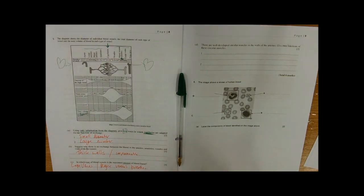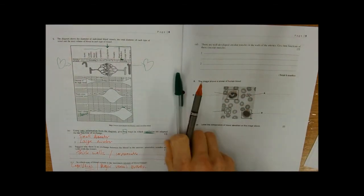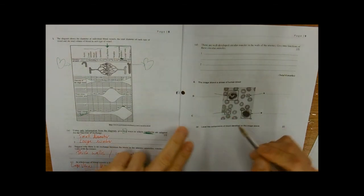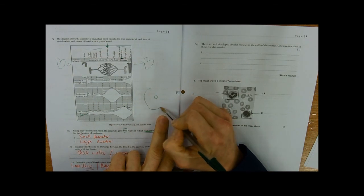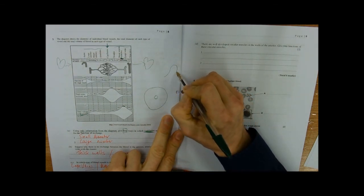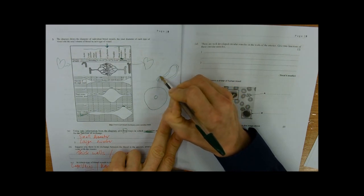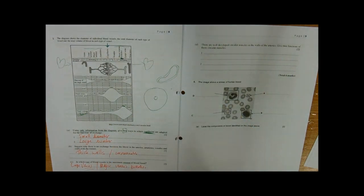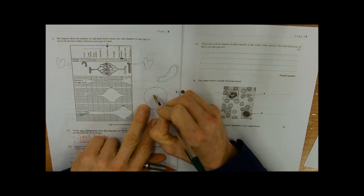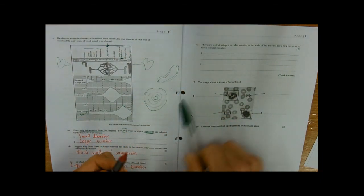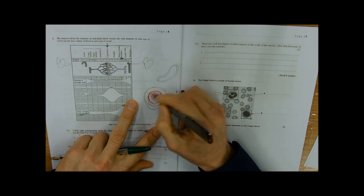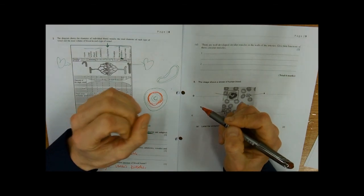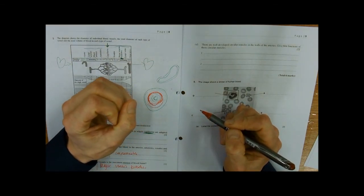There are well-developed circular muscles in the walls of arteries. Arteries have got a smaller lumen and the actual thickness of the wall might be like that, compared to veins that would be more like that. It's saying there's well-developed circular muscles. Circular muscles, as the name suggests, are in a circle, and circular muscles can contract—that's the only thing a muscle can do is contract.